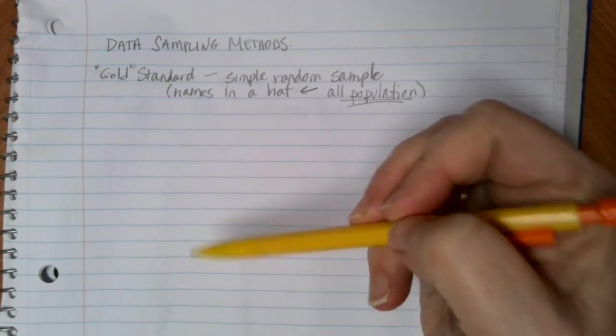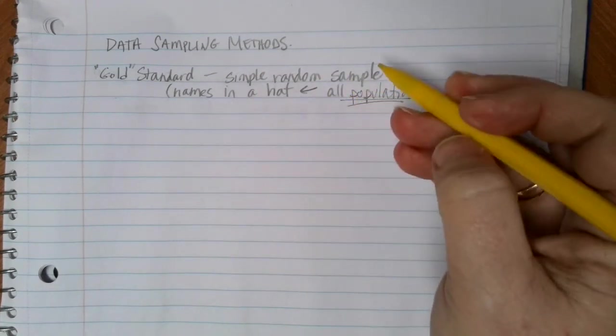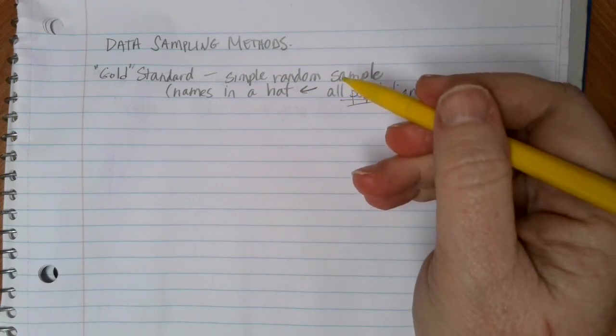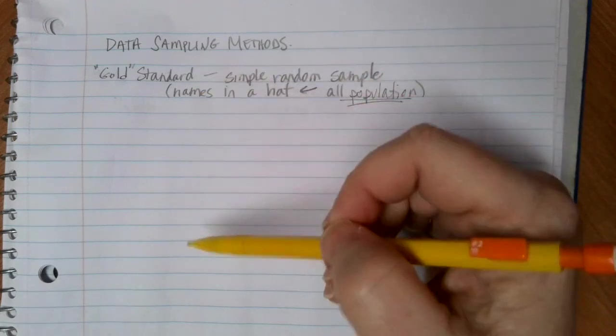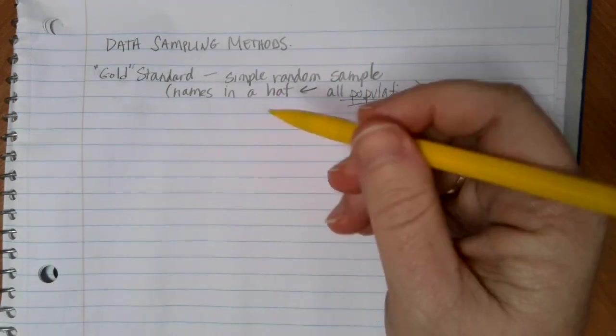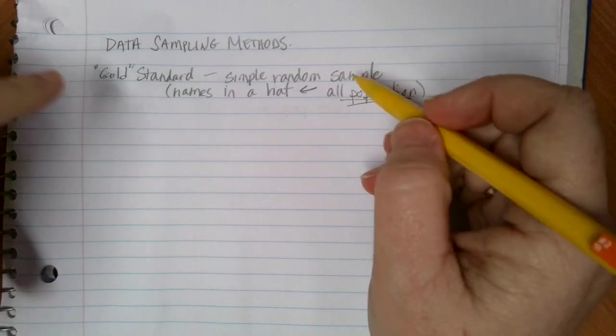Everyone has a chance of getting picked and the computer is doing that selection using some random process on the back end. If you have 100 people and all of their names are on a list and you use a random number generator to come up with the first 20 people that you can talk to.